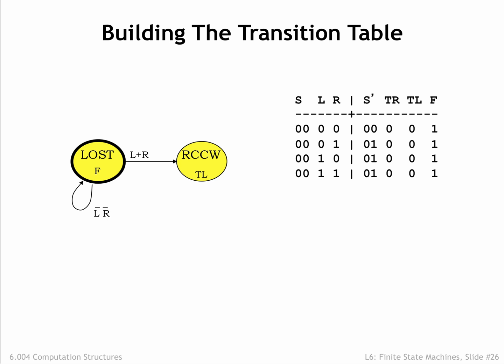If either antenna is touching, the FSM should transition from lost to the rotate counterclockwise state. We've given this an encoding of 0,1. There are three combinations of L and R values that match this transition, so we've added three rows to the truth table. This takes care of all the transitions from the lost state.